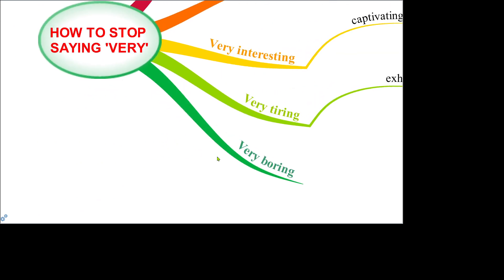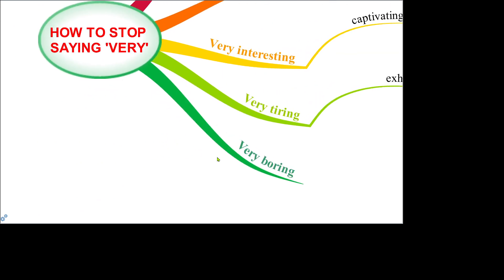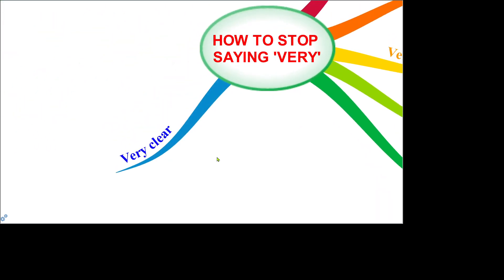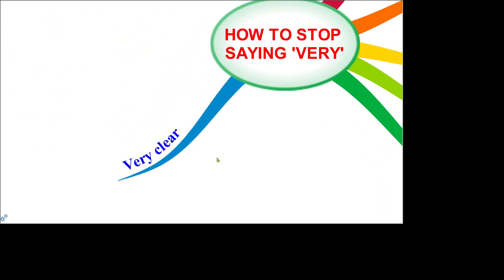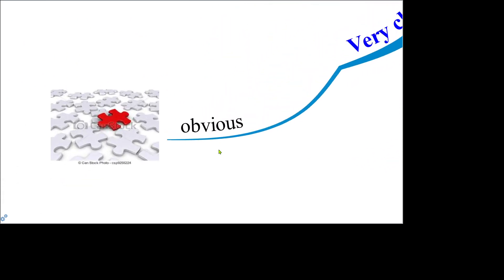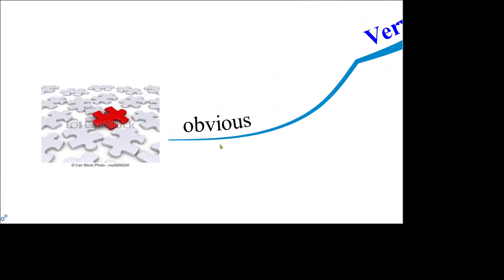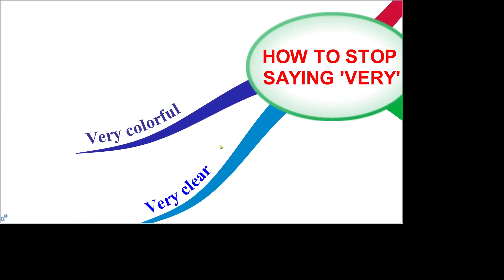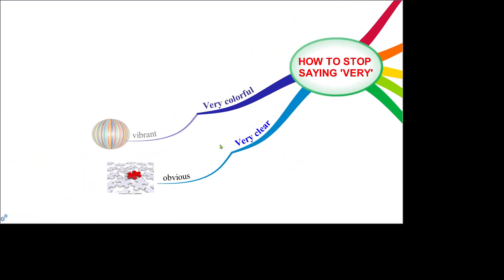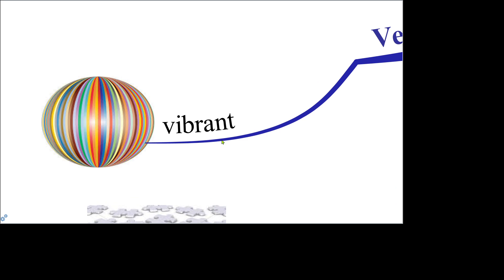Instead of very boring you can say tedious. And instead of very clear you can say obvious. And instead of very colorful you can say vibrant.